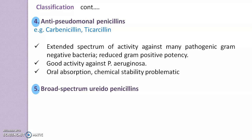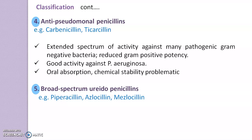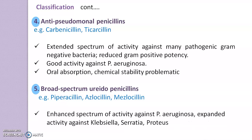The last class is broad-spectrum ureidopenicillins. Examples include piperacillin, azlocillin, and mezlocillin. These have an enhanced spectrum of activity against Pseudomonas aeruginosa, with expanded activity against Klebsiella, Serratia, and Proteus species.